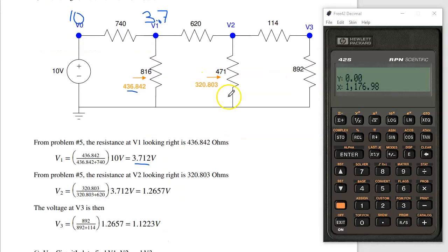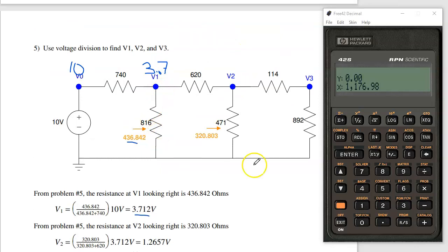Once I know V1, I can find V2. V2 is what I'm measuring divided by the total. Actually, come back up for a sec. To do this on an HP calculator, I would do the resistance that I'm measuring across, 436.842. And here's the trick. I'm going to hit enter a couple times, three times. Now I'll add 740. 740 plus 436 is 1176. That's my denominator. I enter a couple times because it remembered that first number. Now I'll take the ratio. That percentage of 10. 3.71.